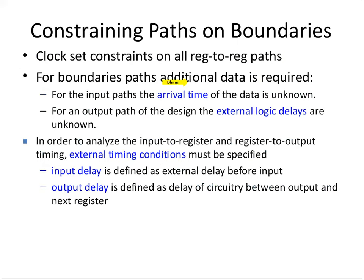For boundary paths, additional data is required: a clock for input paths, and the external timing conditions for register-to-output paths. Input delay is defined as the external delay before the input port. Output delay is defined as the delay of the external circuitry between the output port and the next register. Note that both input and output delay represent the external world — they are estimated values for the external interface.